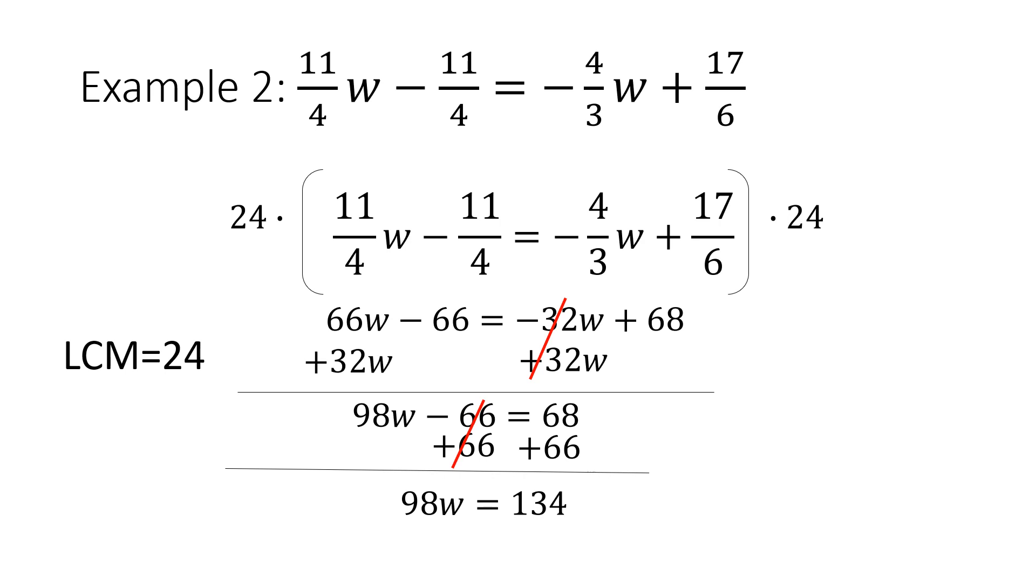In order to solve this, my 98 and my W are being multiplied, so I'm going to divide by 98 on both sides. That gives me a simplified fraction of W = 67/49.